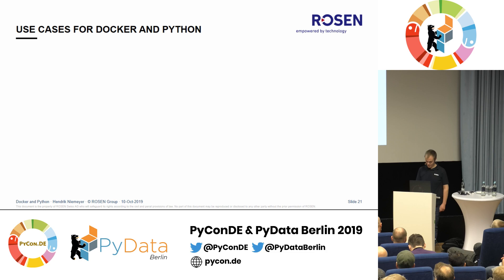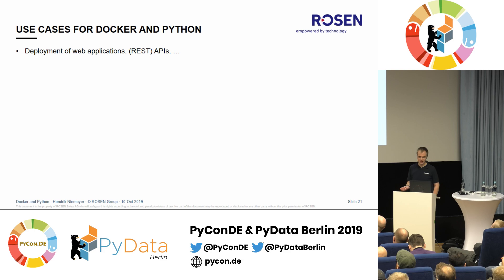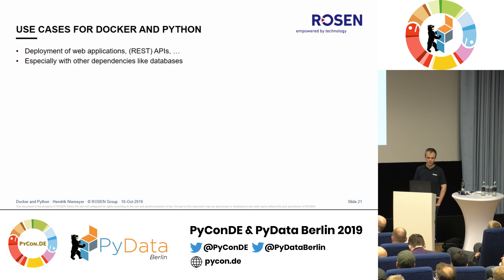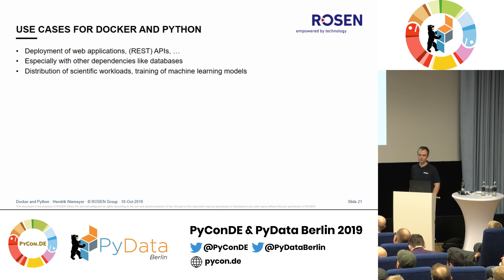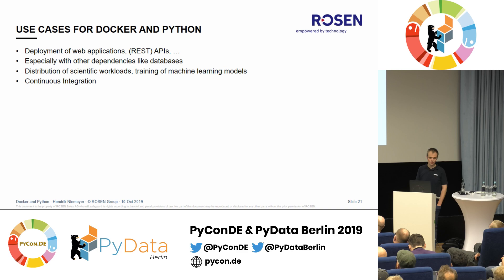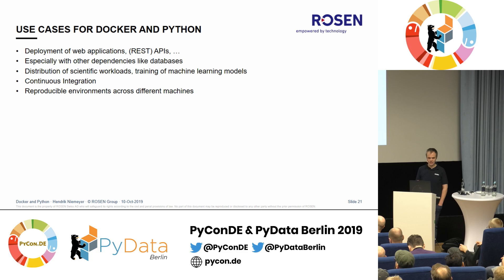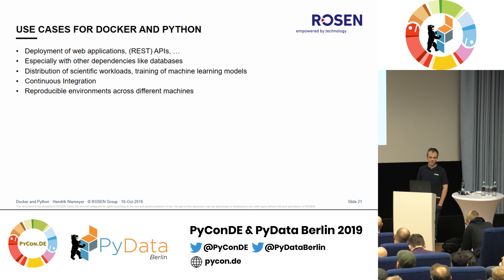Let's come to the final slide: use cases for Docker and Python. You can deploy REST APIs, web applications, applications with dependencies like databases — which you can also put in a container — and distribute scientific workloads that require strange libraries. You can put machine learning model training in containers. You can do continuous integration with Docker — even if you don't want to use Docker to deploy your application, you can use it to perform testing. The main advantage of Docker for me is reproducible environments across different machines — if you have an image built, it's the same image on all machines you run it on.